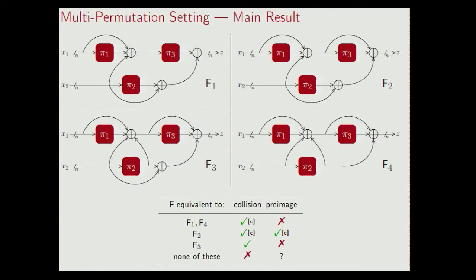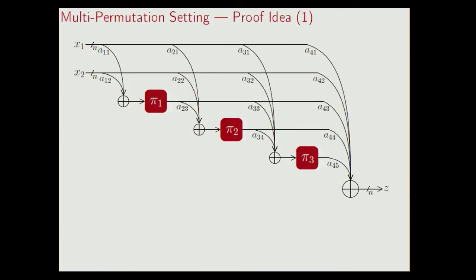So let me explain the idea of the proof. Recall that this is the generic design we are considering, due to the 2^14 functions. First note that many of these functions are already trivially insecure. Indeed, consider for instance the case where all constants, all aij's are zero — then you have a constant function, and it's not really hard to get collisions for that function.